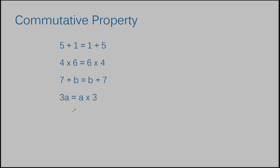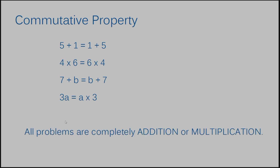Last but not least, I decided to use this example because you do not always have to have a regular written-out multiplication sign to represent multiplication, and it's still valid. It doesn't matter the order — A is first this time and it's still multiplied by three. All problems must be completely addition or multiplication: the first example only addition, the second only multiplication, then only addition, then only multiplication. Let's move on to the associative property.